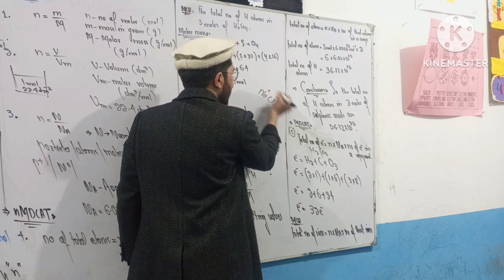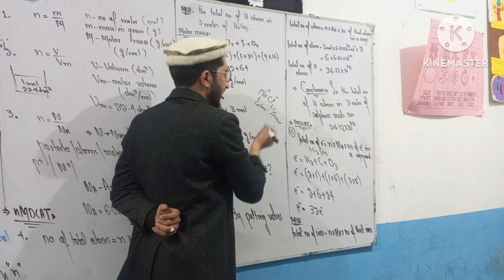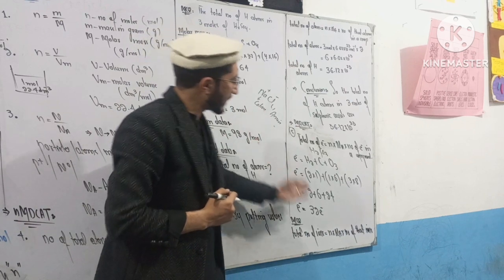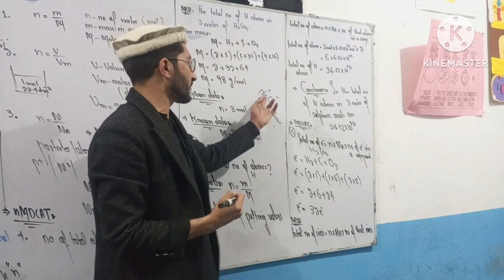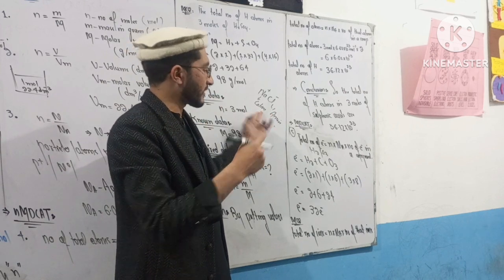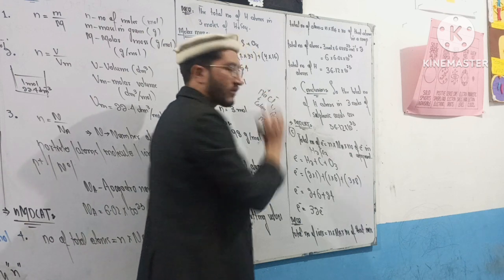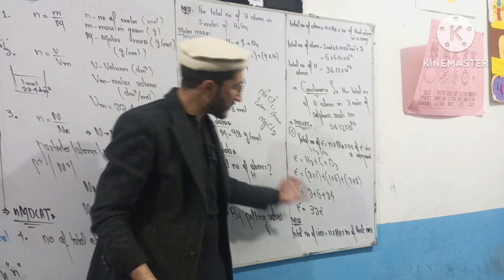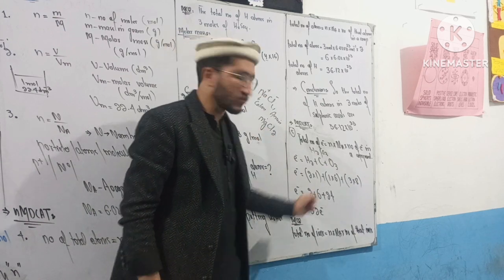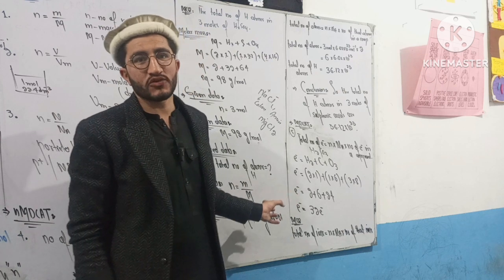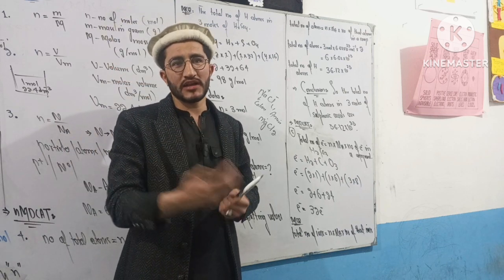For NaCl (sodium chloride), we can find the total number of cations. For MgF₂, if we have 3 moles, the number of fluoride ions is 2 per formula unit. So the total number of fluoride anions equals 3 multiplied by 2, times Avogadro's number. Thank you.